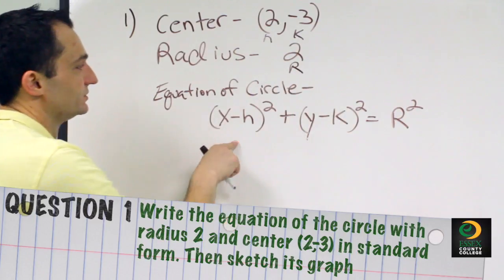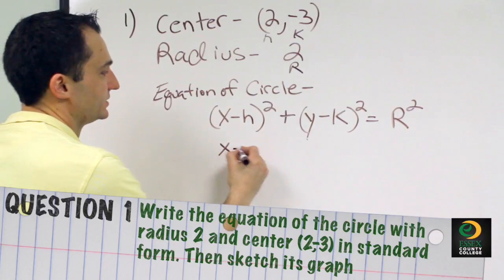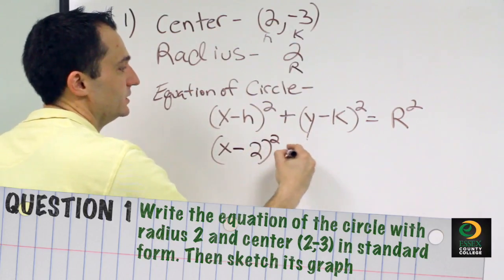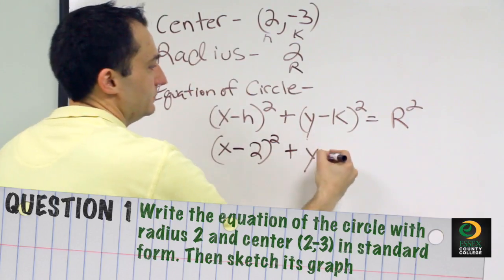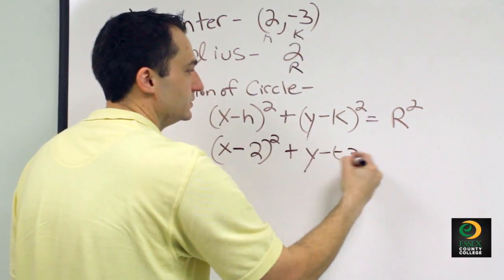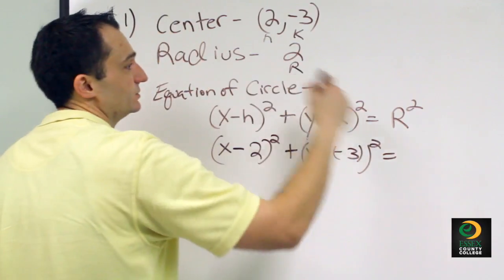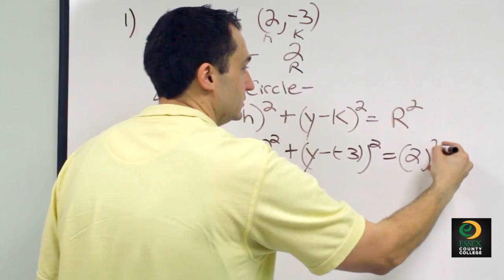So we're just going to rewrite these numbers into our equation. So we're going to have x minus our h, which is 2 squared, plus y minus a negative 3 squared is equal to our radius, which is 2 squared.